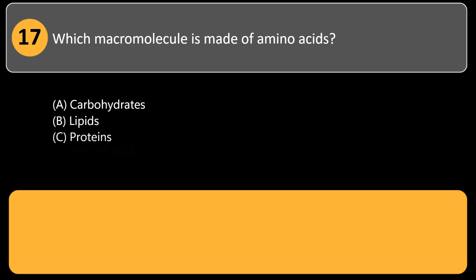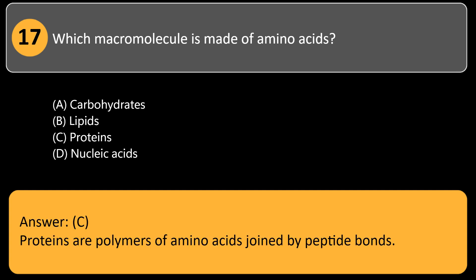Which macromolecule is made of amino acids? A. Carbohydrates, B. Lipids, C. Proteins, D. Nucleic acids. Answer: C. Proteins are polymers of amino acids joined by peptide bonds.